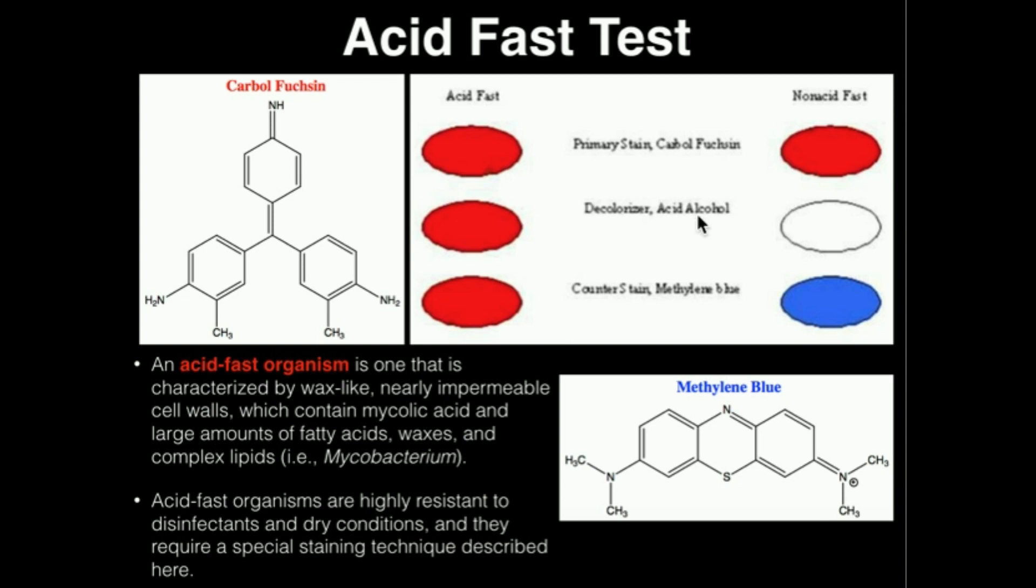And then in a similar way to what we did in the gram stain, we're going to use a counterstain. In this case, the counterstain is methylene blue. This is methylene blue. And the counterstain will only stain non-acid-fast organisms. So any non-acid-fast organism will stain blue, and acid-fast organisms will stain red.